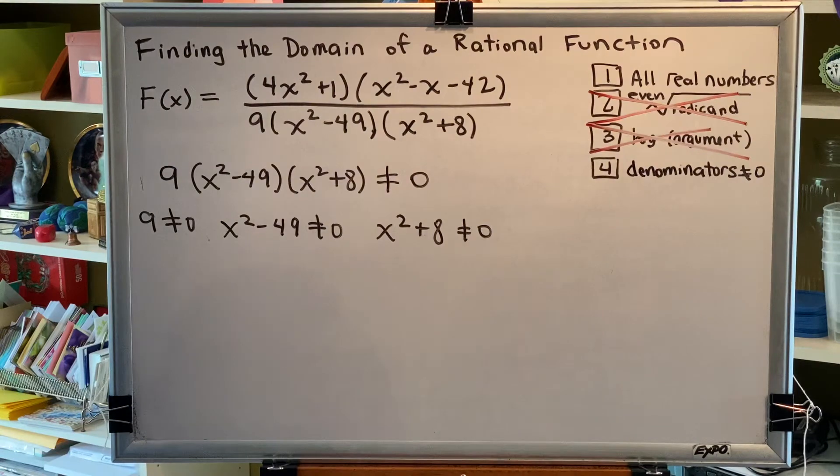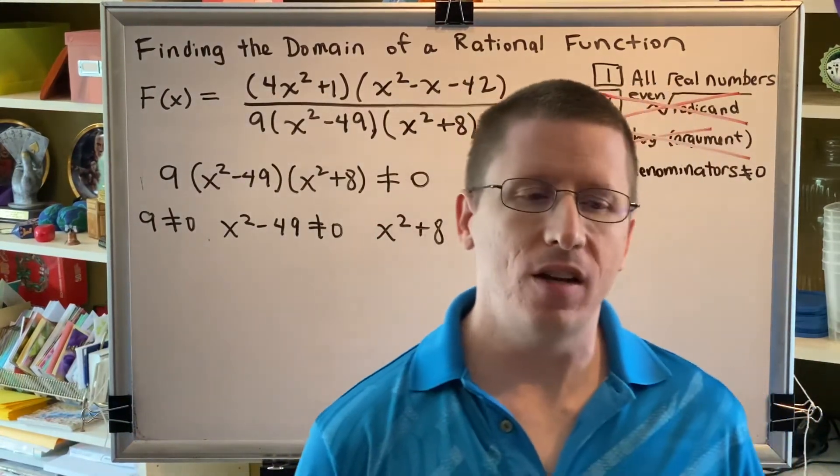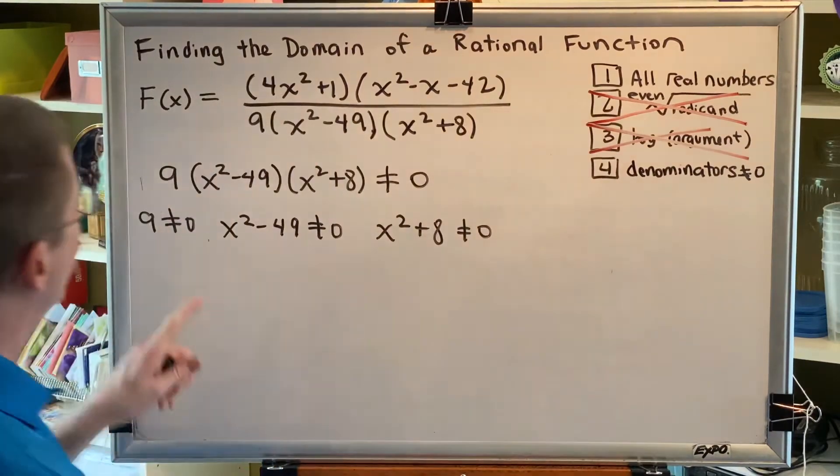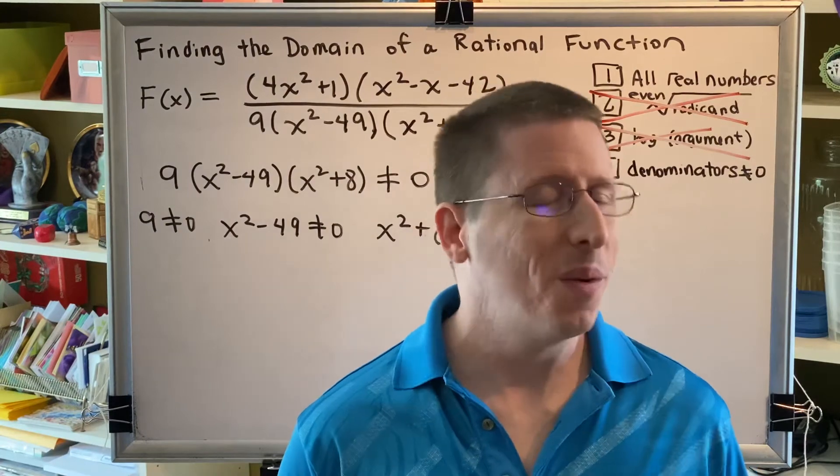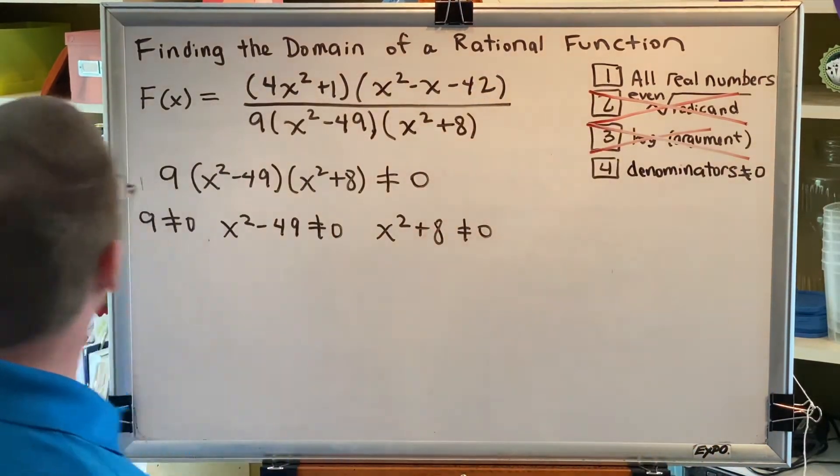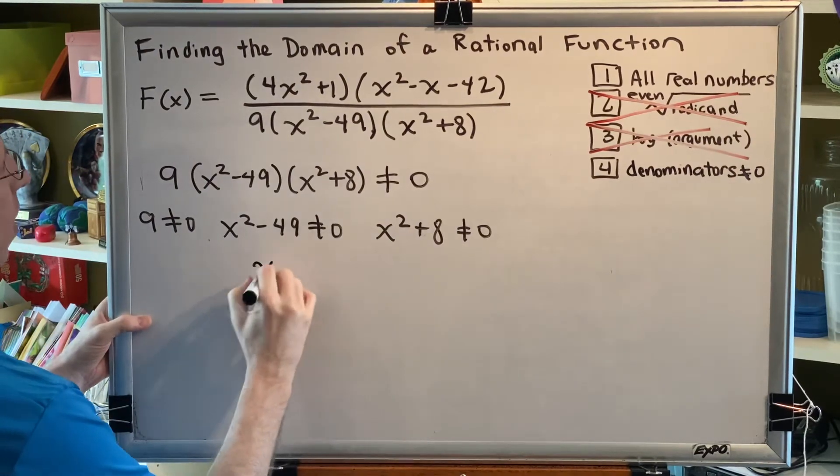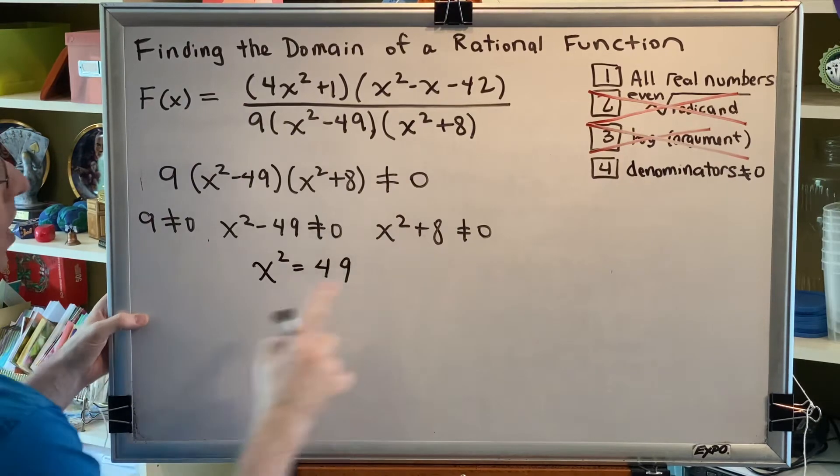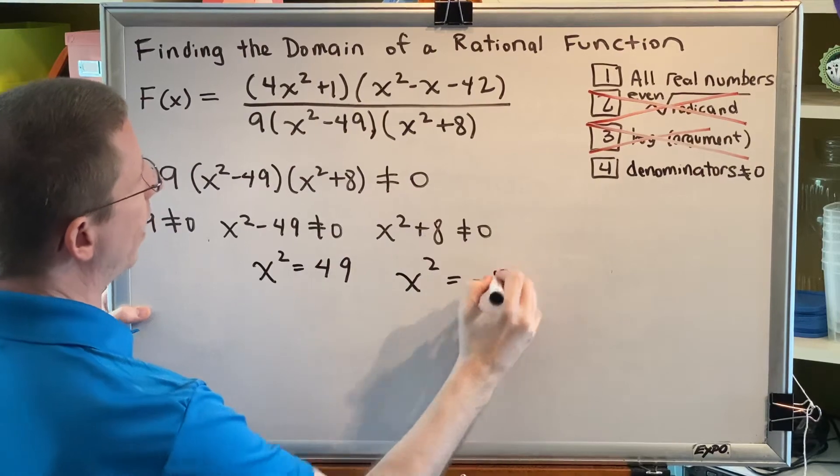Now remember that the goal here is to find facts about x - find restrictions, find values of x that we are not allowed to use. 9 ≠ 0 is true, but it doesn't tell us anything about x, so this will not contribute to our solution. In our second equation, we can add 49 to both sides, so we get x² = 49. And in our third equation, we can subtract 8 from both sides, and we get x² = -8.